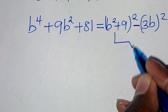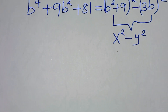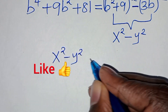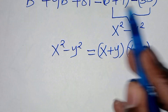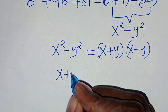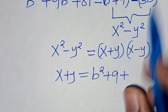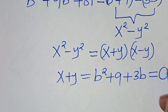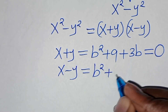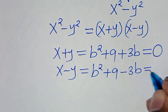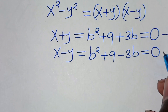As you can see, this is the difference of two squares, expressed as x squared minus y squared, which equals x plus y times x minus y. So x plus y is b squared plus 9 plus 3b, and x minus y is b squared plus 9 minus 3b. We set each equal to 0 — let's call these equation 1 and equation 2.